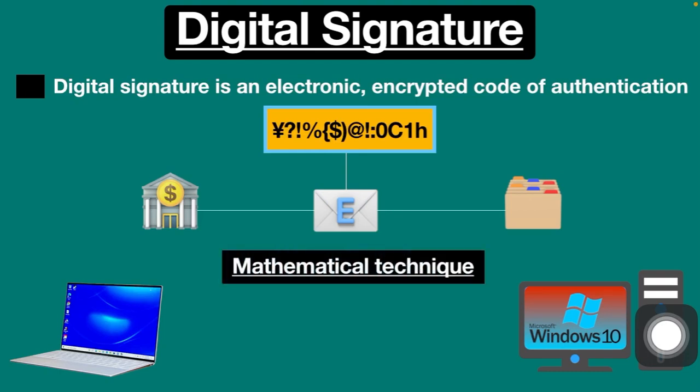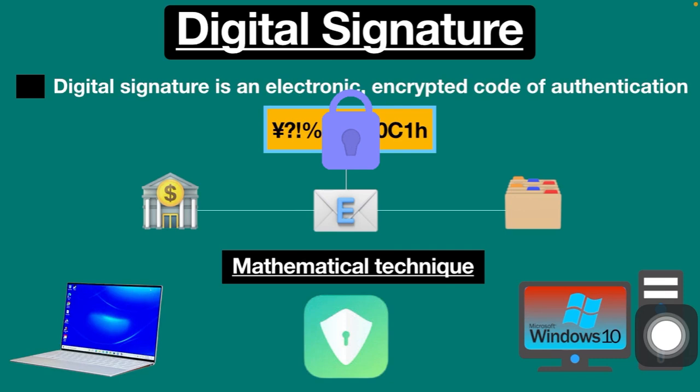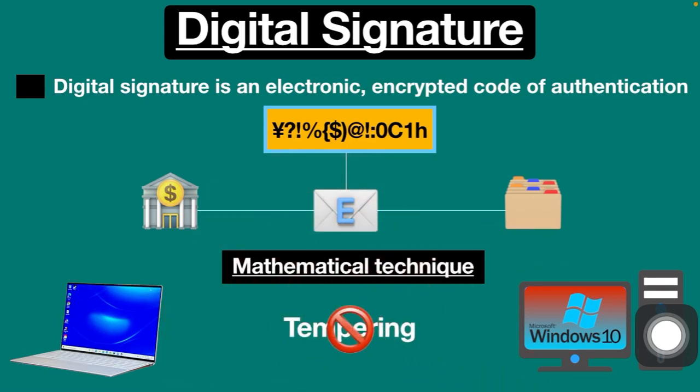Digital signature uses advanced mathematical techniques to validate the authenticity and integrity of a message. As mentioned, a digital signature is equivalent to a handwritten signature but offers more security, and also provides evidence of origin, identity, and status of the message. The main purpose of a digital signature is to solve the problem of tampering in digital communications.